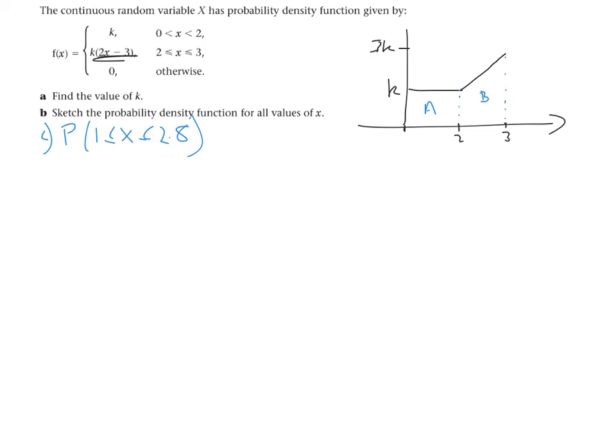That rectangle shape A, the area of that is 2 times k, so we've got 2k. And then for the trapezium that we have there, the height of this side is k, and the height of this side is 3k. So we're going to have k plus 3k over 2 times by the height, so the distance between these two, which is 1. So what we'll end up getting is 2k plus 4k over 2, which will give us 2k, so ultimately we're going to end up with 4k. And we know that the entire area equals 1, which means that k is 1 over 4.